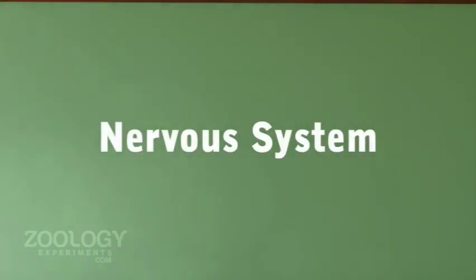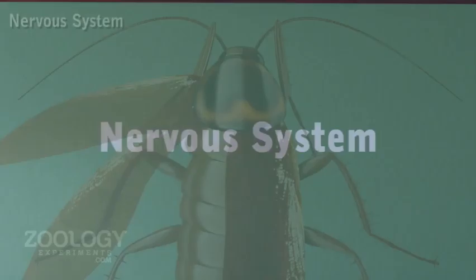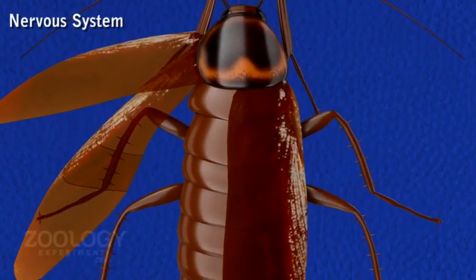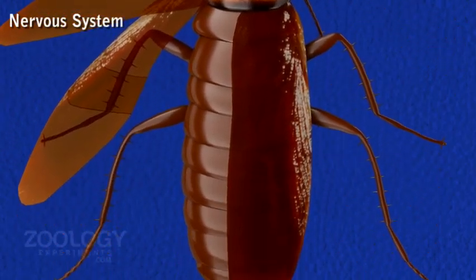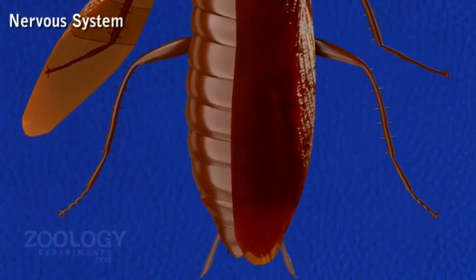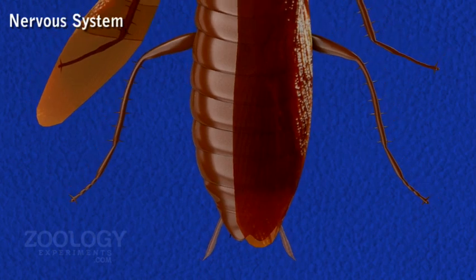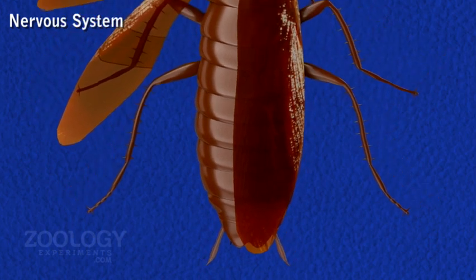Nervous system comprises the central, peripheral, and sympathetic nervous system.